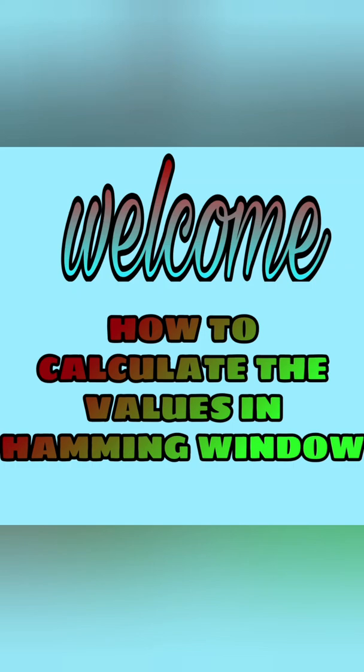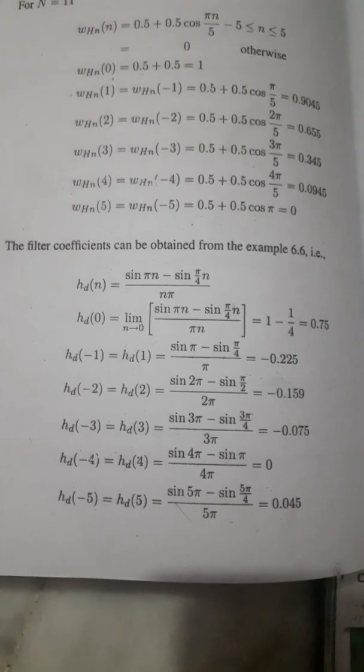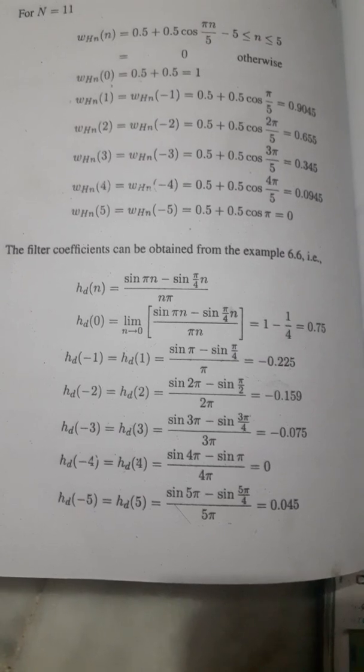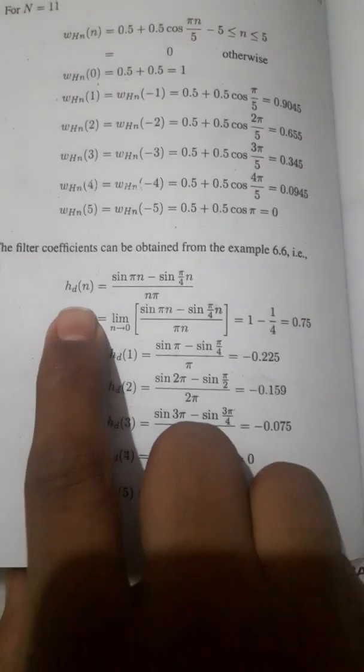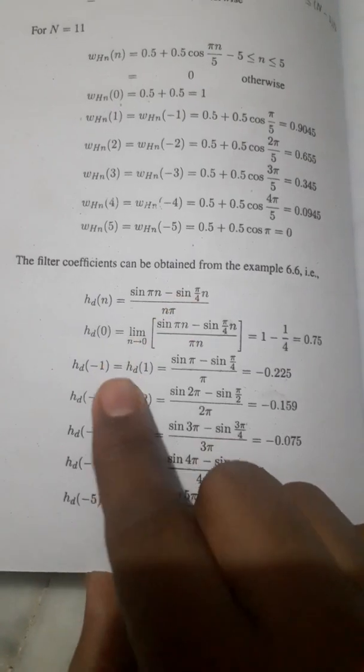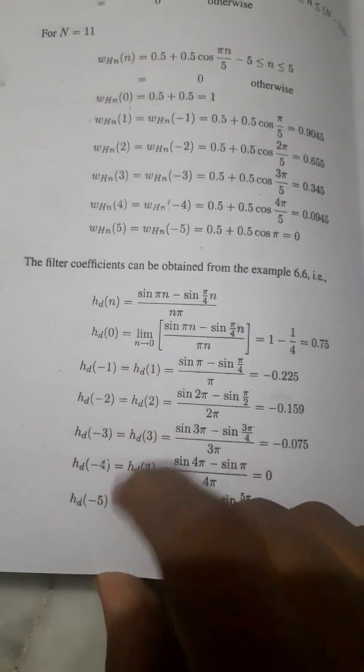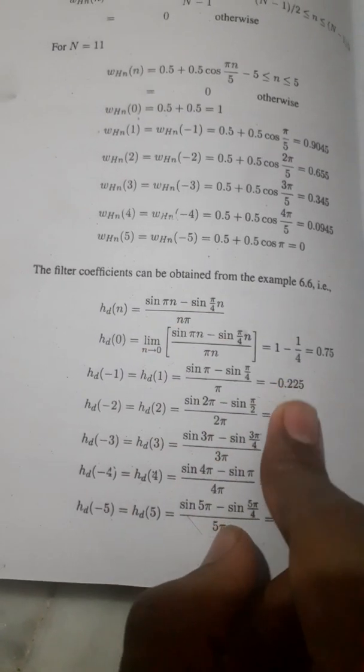Welcome friends. Today's topic is how to calculate the values in the Hamming window. First, we take the values: ht(n) = (sin πn - sin π/4 n) / (nπ). We substitute the values 1, 2, 3, 4, 5 and we have to get the values -0.225, etc.